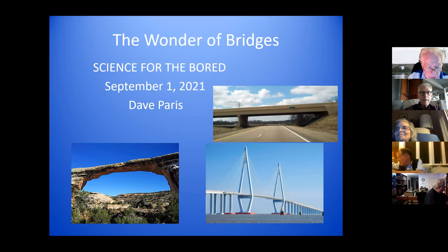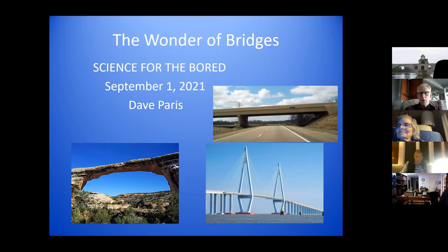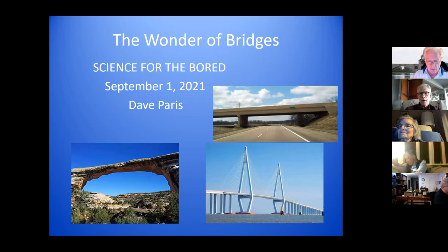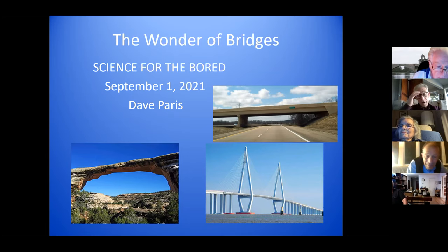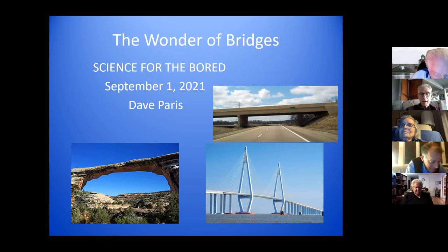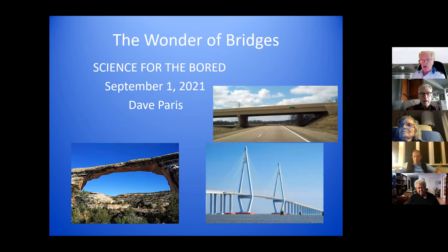There are about 600,000 bridges in the United States, and that includes overpasses, because overpasses are by definition bridges. The picture here shows the Owak Shoma Natural Bridge, which is in Utah. I'm not going to be talking about natural bridges, but I just wanted to show what that looks like. The bridge in the lower right is the Hangzhou Bay Bridge in China, and in the upper right is just an overpass.